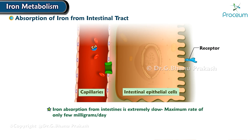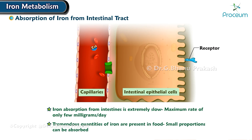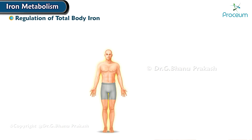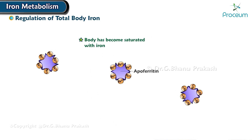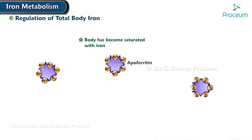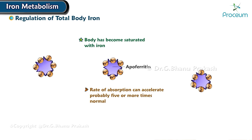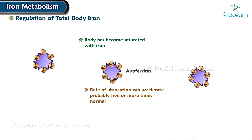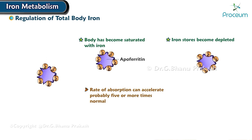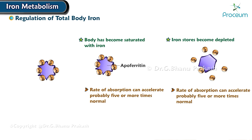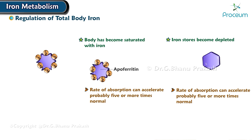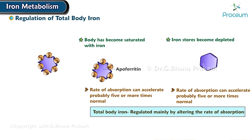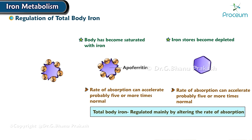This means that even when tremendous quantities of iron are present in the food, only small proportions can be absorbed. Regulation of total body iron: when the body has become saturated with iron so that essentially all apoferritin in the iron storage areas is already combined with iron, the rate of additional iron absorption from the intestinal tract becomes greatly decreased. Conversely, when the iron stores have become depleted, the rate of absorption can accelerate, probably five or more times normal. Thus, total body iron is regulated mainly by altering the rate of absorption.